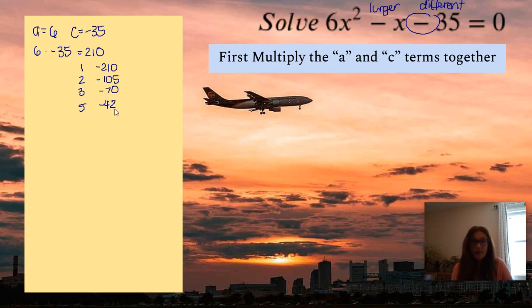And then 4 we can't use, so we have to go to 5 and negative 42. Still won't work because we're looking for the two numbers to add together to give me negative 1. So really that's telling me that my numbers are going to be consecutive. And that would be 6 and negative 35 wouldn't work.